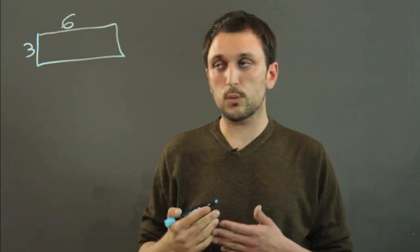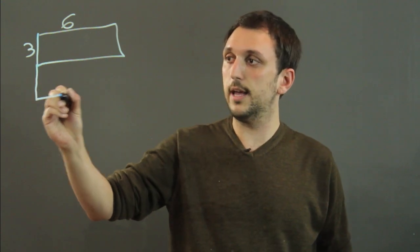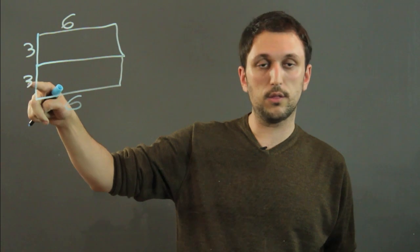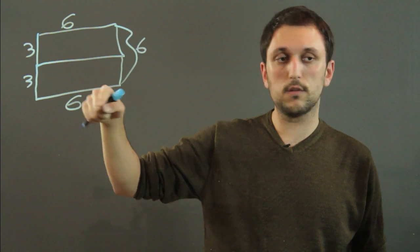Now, if we want to make a square out of a few rectangles, we could take another rectangle that is 3 by 6 and put it together with this one. So now we have 3, 3, so that whole thing here is 6. So now we have a 6 by 6 square.